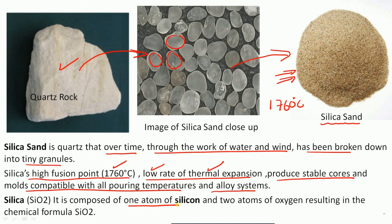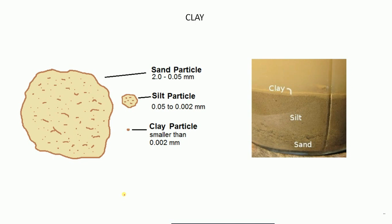The silica sand composition has one atom of silicon and two atoms of oxygen, making it SiO₂. Now we are studying clay and the sand particle system.